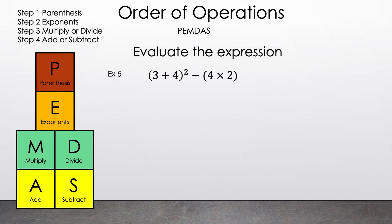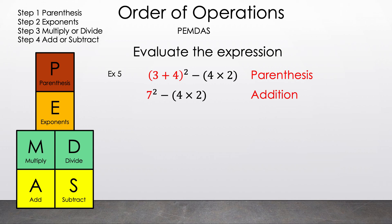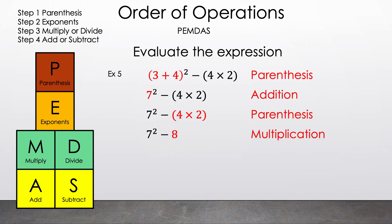Now let's look at example five. Evaluate the expression the parentheses of 3 plus 4 squared minus the parentheses of 4 times 2. We see parentheses — let's highlight both of them. Since neither set of parentheses is inside the other, they don't affect each other. We'll read left to right, so we do 3 plus 4 first. 3 plus 4 gives us 7. Now we have 7 squared minus the parentheses of 4 times 2. We still have parentheses, so let's do the operation inside: 4 times 2 is 8. Now we have 7 squared minus 8. Since square is a type of exponent, we do that first. 7 squared is 49. Now we have 49 minus 8, and the result is 41. That is our answer for example five.